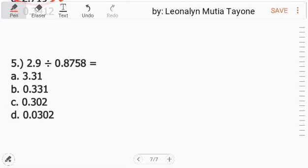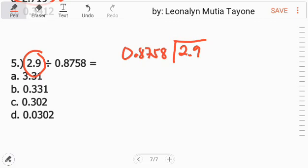Number five, division. Para mas klaro, isulat natin ganito: 2.9 divided by 0.8758. Ang divisor natin dapat whole numbers yan. Siya para maging whole numbers, itong decimal i-move natin to the right: one, two, three, four. Kung four times kang nag-move, four times ka rin dito sa kabila. Ito yung decimal dito, one, two, three, four. Ito yung decimal. Lagyan mo ng mga zero dito, and then ang decimal i-align mo sa taas.